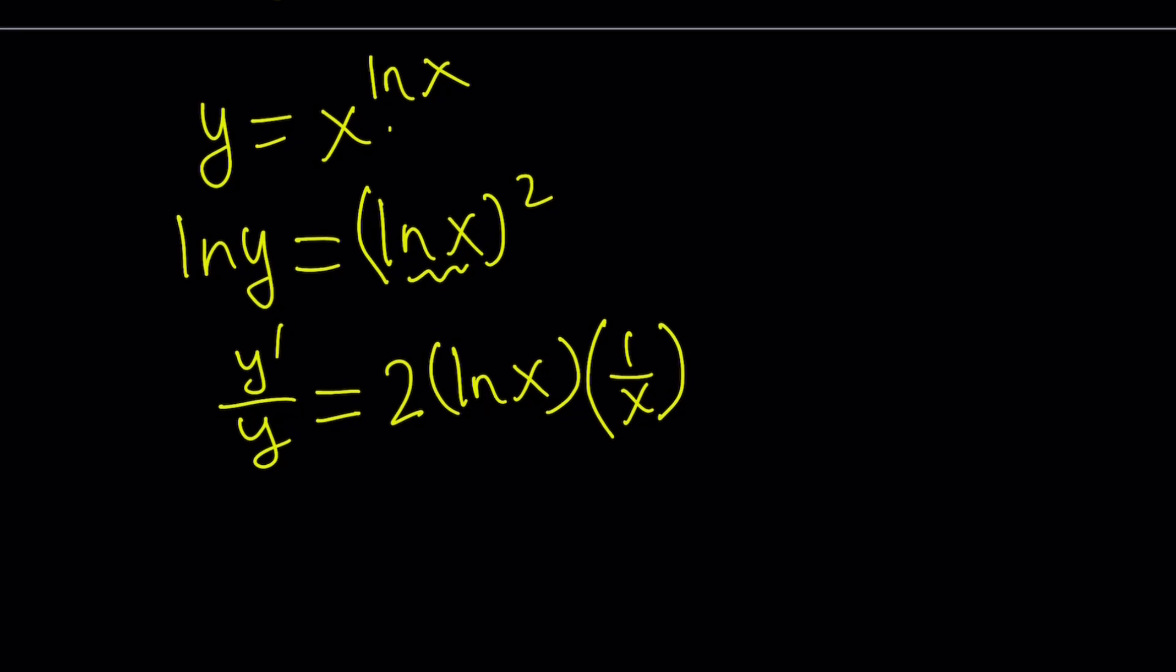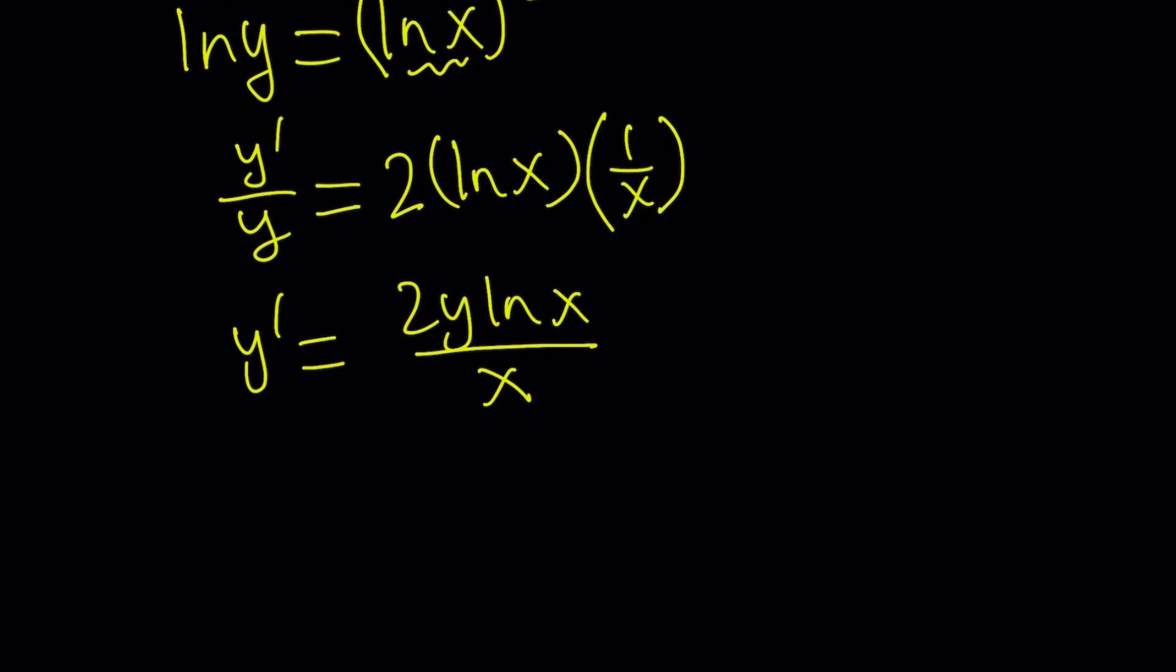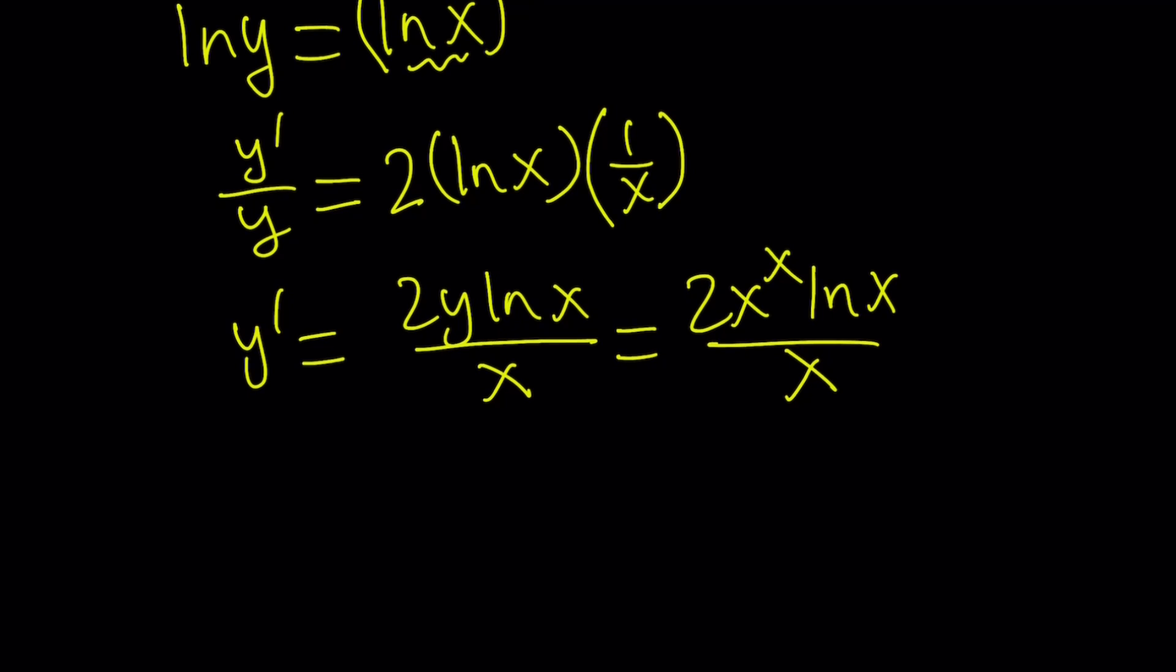Now, if you put it together, it's going to look like this: y prime equals 2y ln x divided by x. But y is x to the power ln x. So, we can write it as 2x to the power ln x times ln x divided by x. You can divide by x and cancel out. But this is good. Remember, x must be positive. So, we don't have 0 at the bottom.